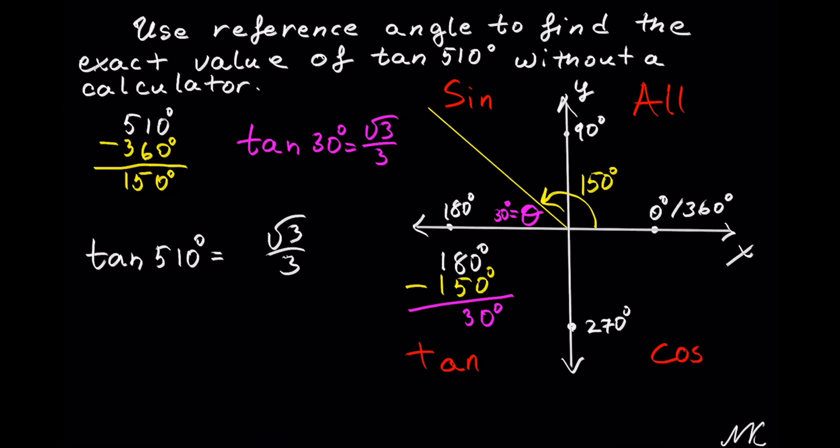And cosine and its reciprocal is positive in the fourth quadrant. Since only sine and cosecant functions are positive in the second quadrant, where our angle falls, it means that the value of tangent of 510 degrees will be negative radical 3 out of 3, because tangent is negative in the second quadrant. So this will be our solution. That's all.